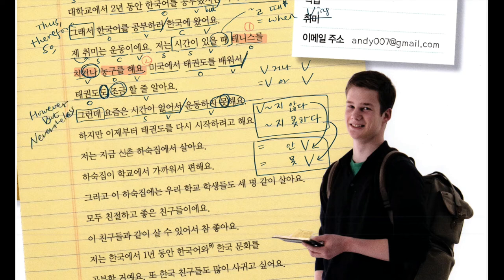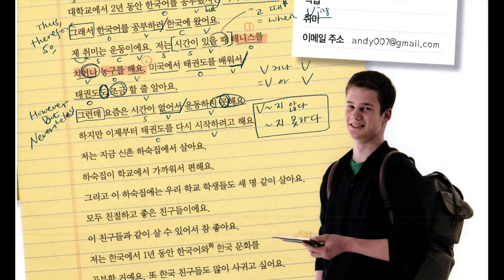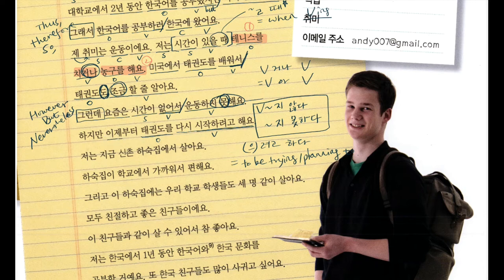하지만 이제부터 태권도를 다시 시작하려고 해요. No subject. 다시 시작하려고 해요 is the verb, 태권도를 is the object. 으려고 하다 means 'be trying to,' 'planning to,' 'I am going to.' I'm planning to start taekwondo again from now on. 하지만 is also a conjunction meaning 'however,' basically the same as 그런데.